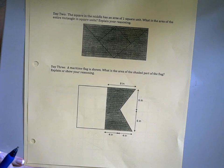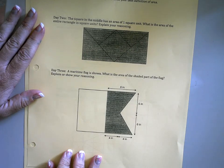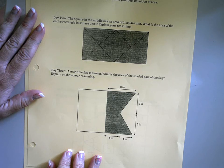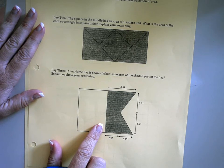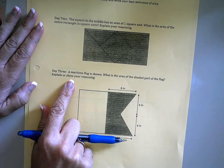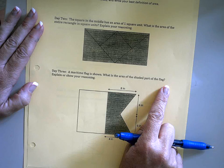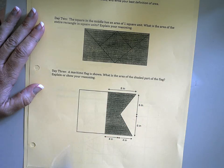So I did go to the shoebox for this week's homework that you received Monday and that's due tomorrow, and there was a question about could we do the third problem. So sure, a maritime flag is shown. What's the area of just the shaded part of the flag? Explain or show your reasoning.